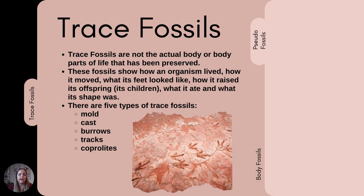With trace fossils, we're looking at traces of the animal. These can be things like tracks or burrows where the organism was wiggling its way through sediment. This can also come in the form of coprolites, which is fossilized poop. And then we have molds and casts, which are impressions of the specimen.